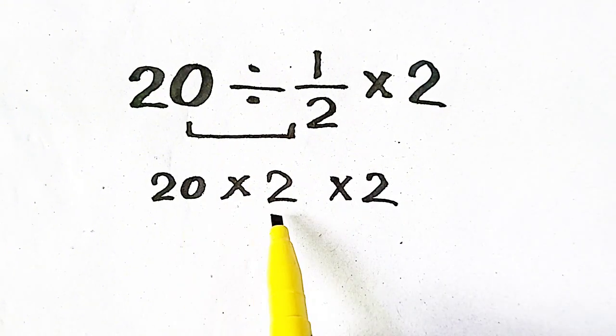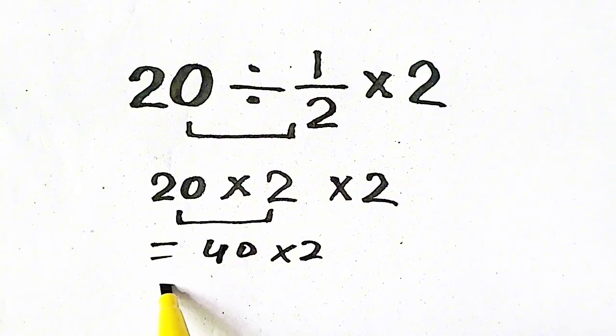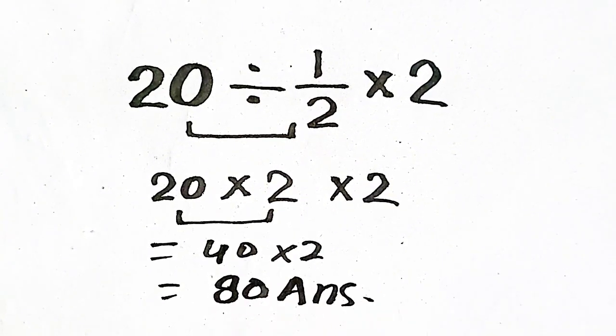Now 20 is multiplied with 2. We will get 40. Times 2. So 40 times 2 will be 80, which will be our answer.